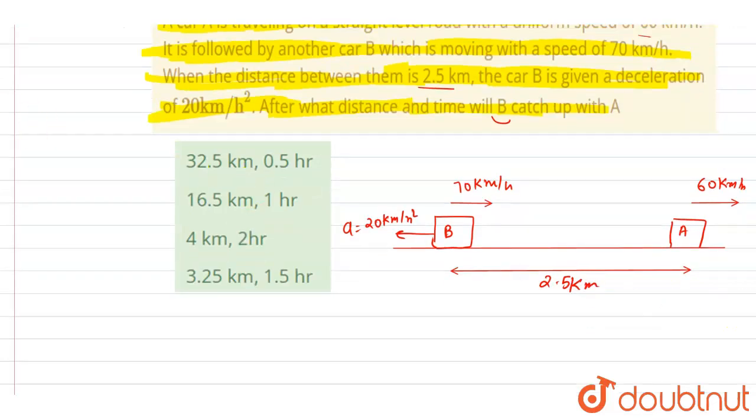So you can just calculate the time. If I do with respect to A, I will write down velocity of B with respect to A. It is 70 minus 60, which is 10 km/h. And acceleration: since A is not having any acceleration, the acceleration of B with respect to A is -20 km/h².